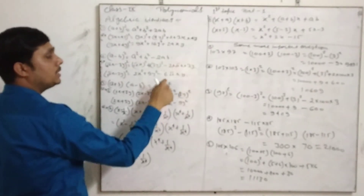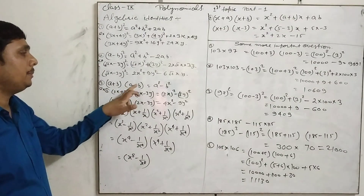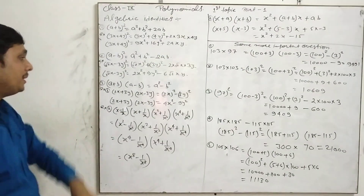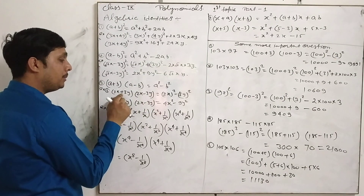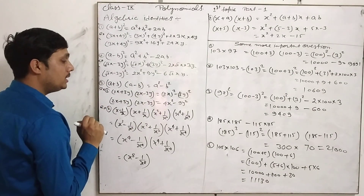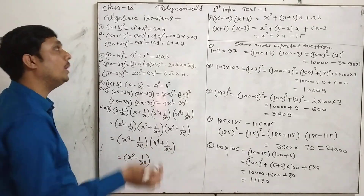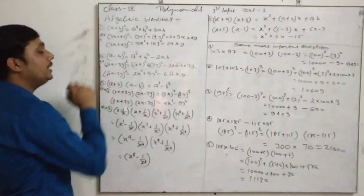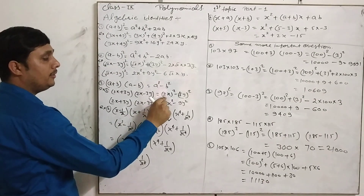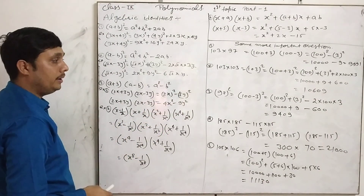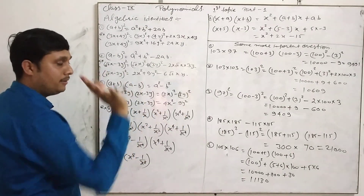The third identity: (a + b)(a − b) equals a squared minus b squared. For example, (2x + 3y)(2x − 3y) — here a is 2x and b is 3y, so a squared is 4x squared and b squared is 9y squared, giving the answer 4x² − 9y².